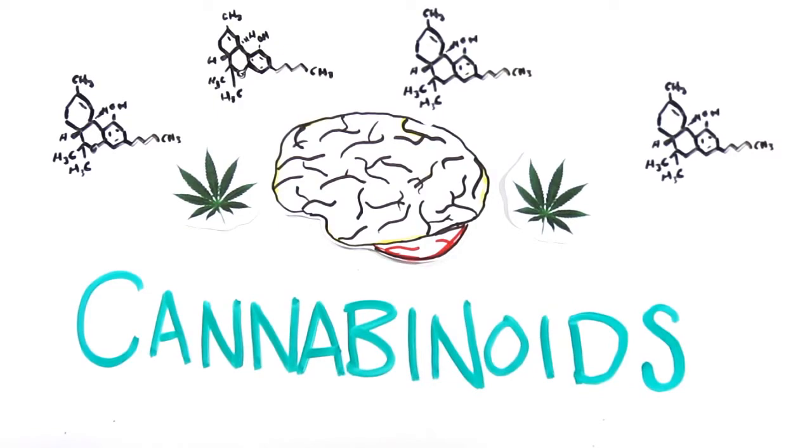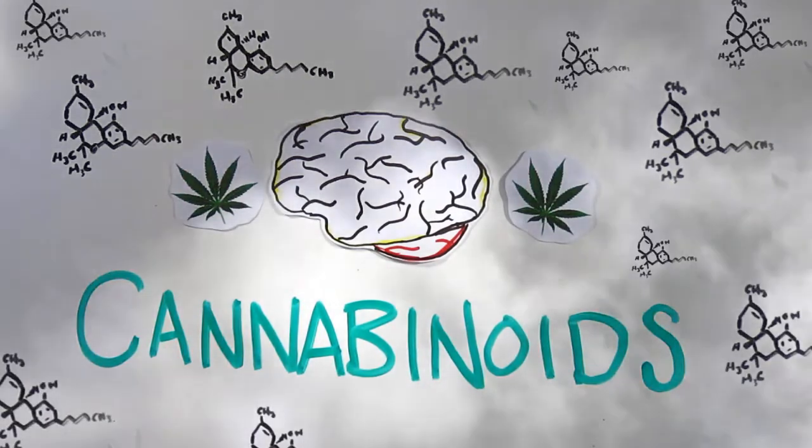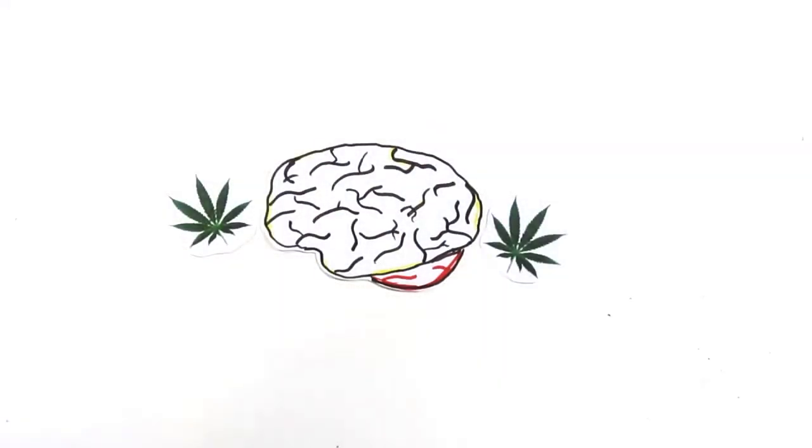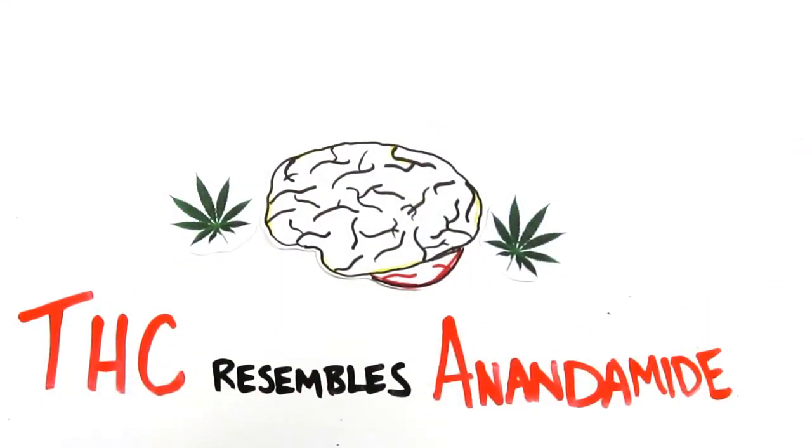Though naturally, these cannabinoids circulate in much lower quantities compared to the large influx imposed by smoking. Specifically, the chemical tetrahydrocannabinol, or THC, resembles a natural transmitter called anandamide.